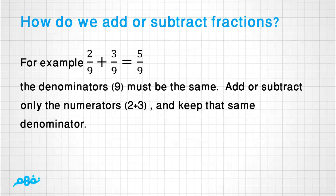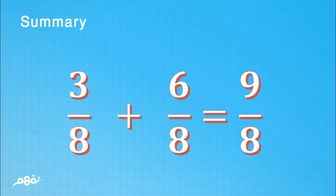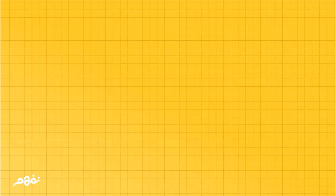And also 3/9 - 2/9 = 1/9. Summary: 3/8 + 6/8 = 9/8 because 3 + 6 = 9 and keep the 8. As in the example, 3/5 + 3/5 = 6/5.